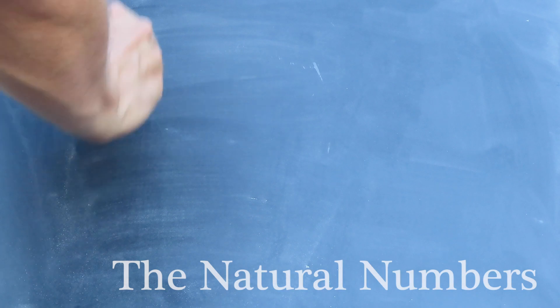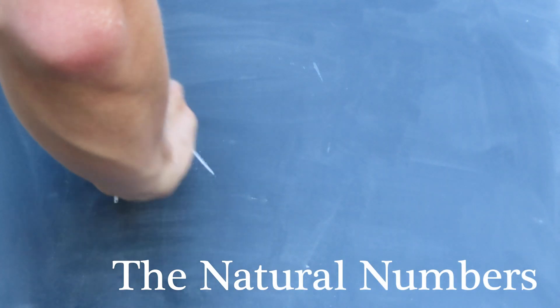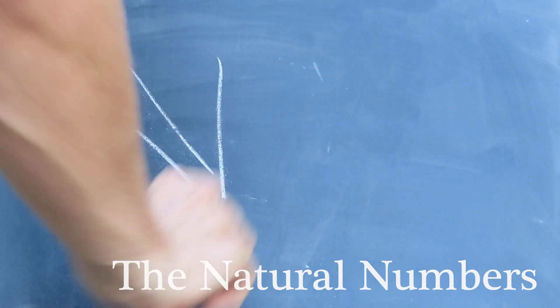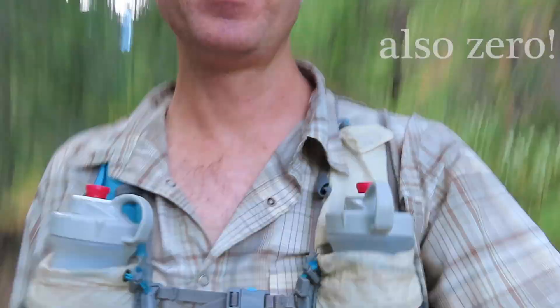So here's a quick preview of the next few episodes. We start with N, the natural numbers. These are the things that you use to just count: 1, 2, 3, 4, etc. Everyday ideas that are arguably ancient ones are built into the very foundation of modern mathematics.